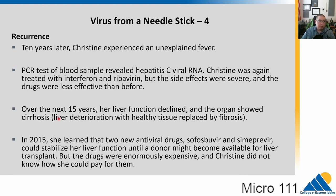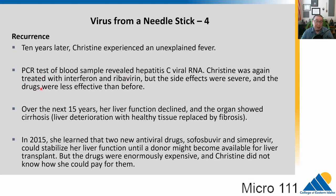They take her off the therapy because the side effects are greater than the effects of having the virus. She's fine, and for 10 years her immune system keeps the virus under control. But 10 years later she experiences an unexplained fever. Because of her medical history, they test her blood and find that hepatitis C viral RNA is high again. She's put on interferon and ribavirin again, but the side effects are severe and the drugs are less effective than before. Over the next 15 years, her liver function starts to decline.